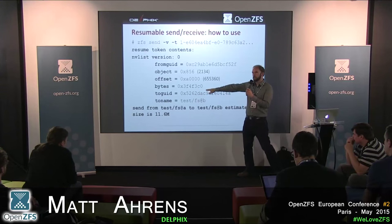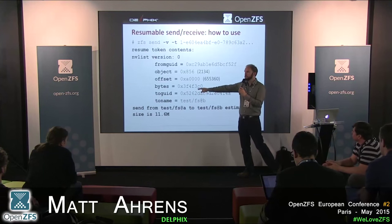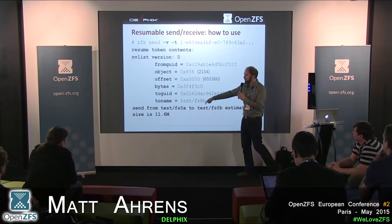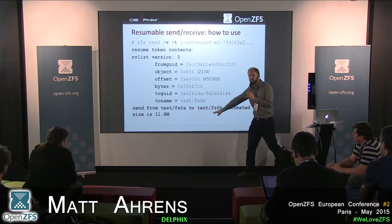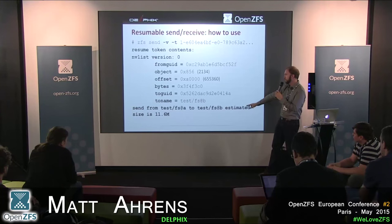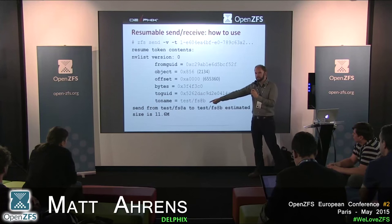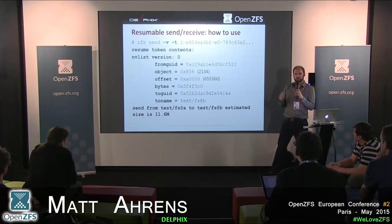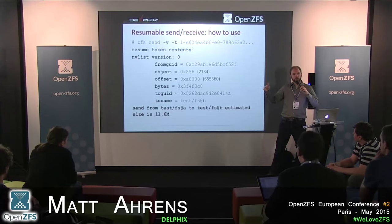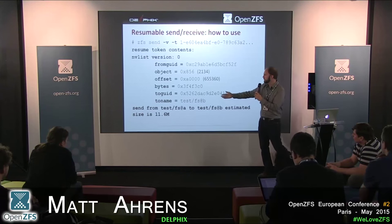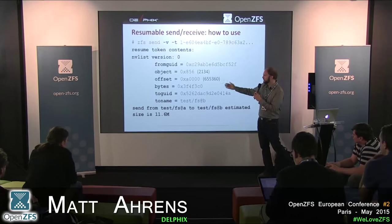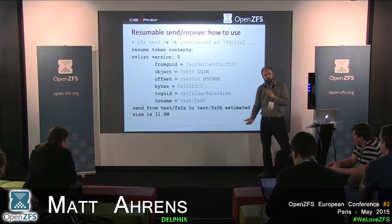The token also includes the amount of data already received, which is used to update the size estimate. So when resuming, the estimate shows the remaining amount — e.g., the whole send is 20MB, you've already received 9MB, so 11MB left.